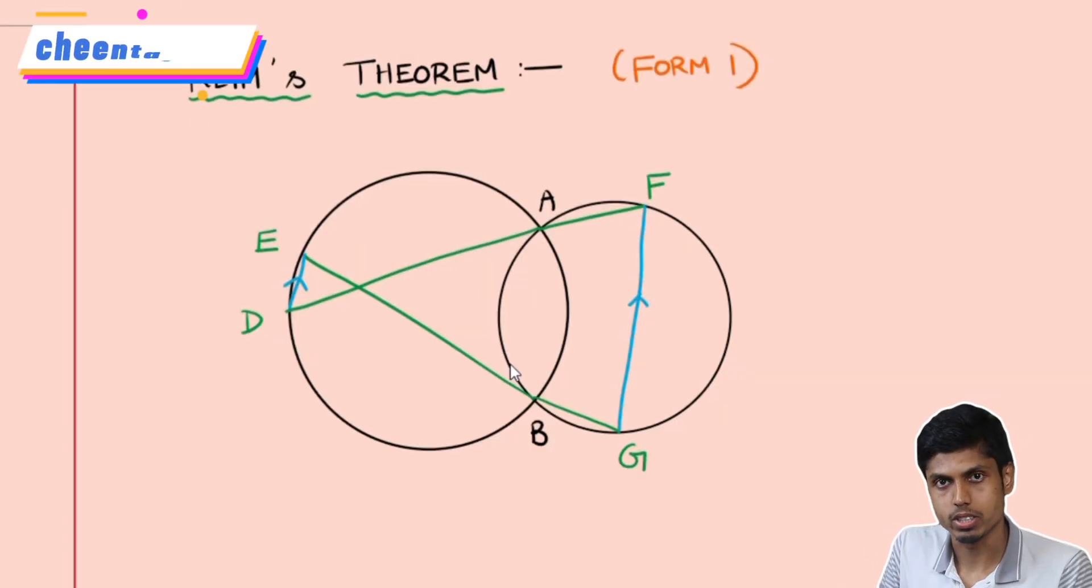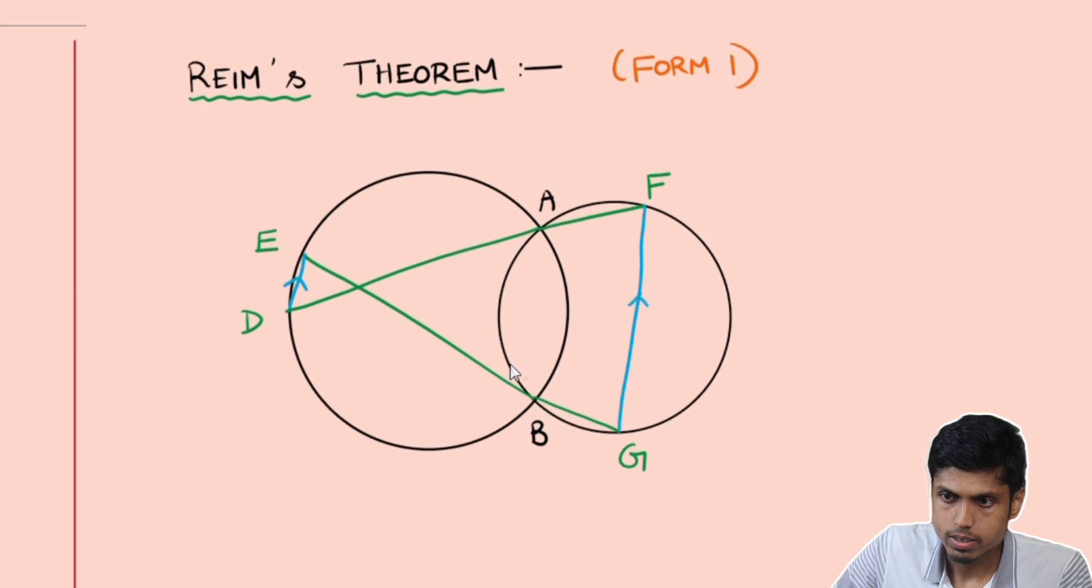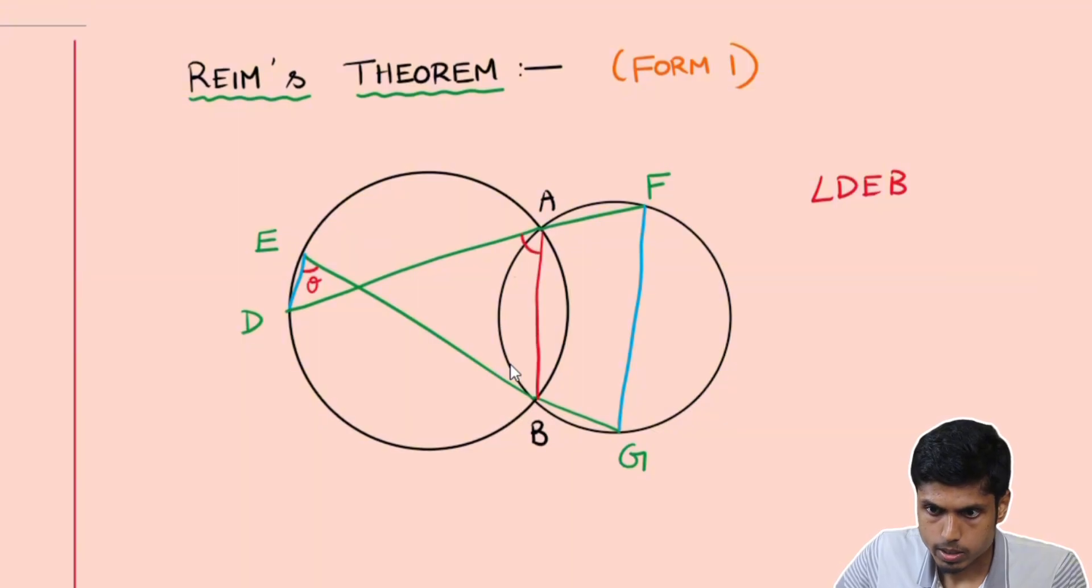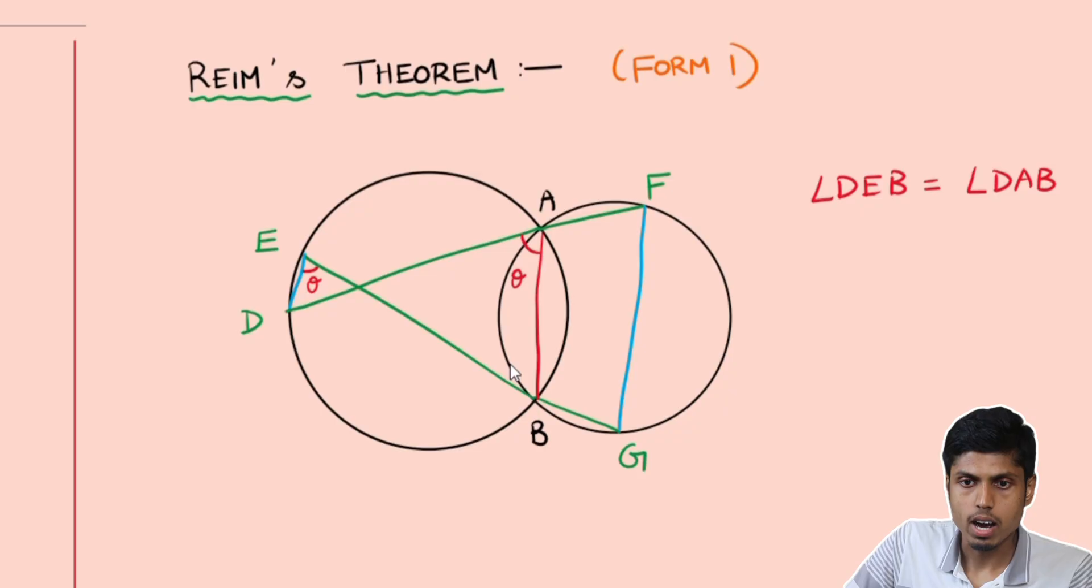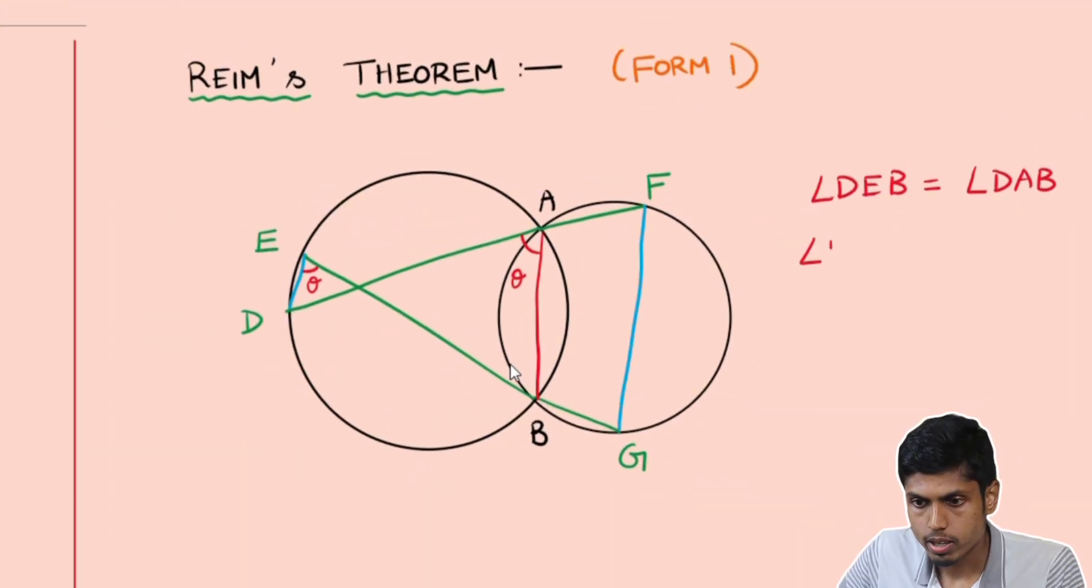How come they are parallel? The proof is quite simple. Suppose I consider the angle DEB and call it theta, then it is equal to angle DAB. By the angle subtended by arc DB is same throughout the other arc of the circle, we get angle DEB equal to DAB, and then angle BAF is 180 minus theta.